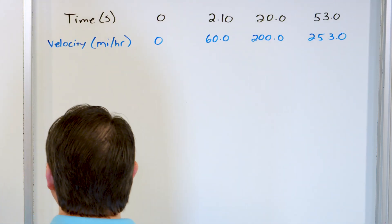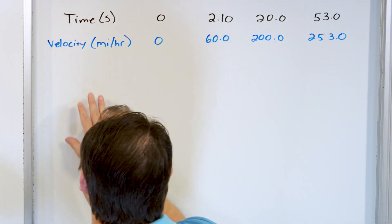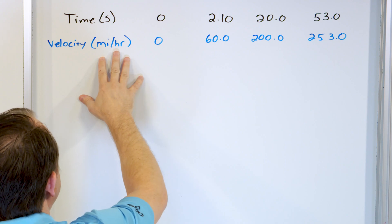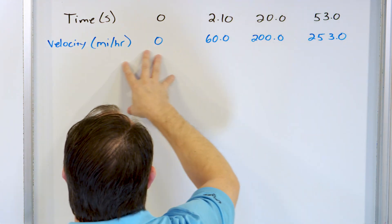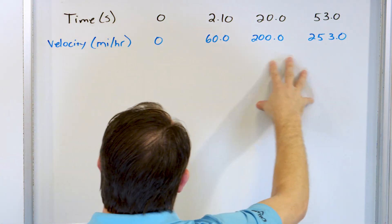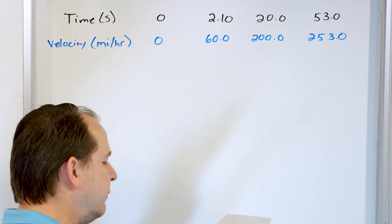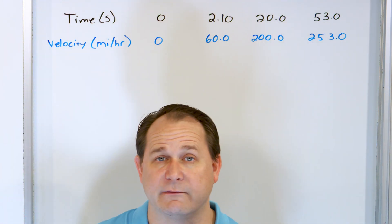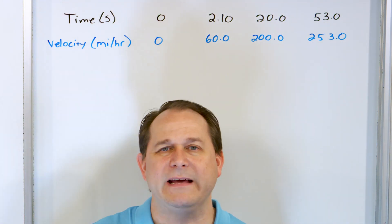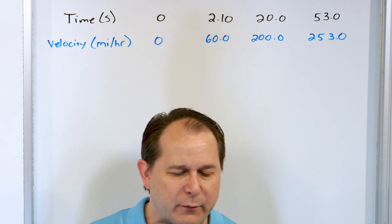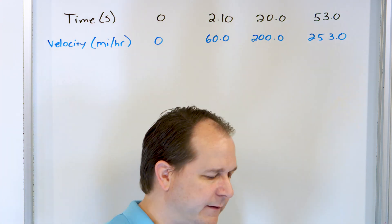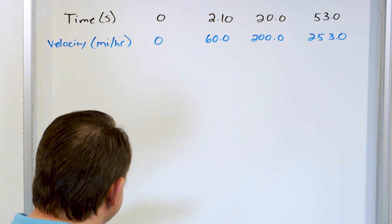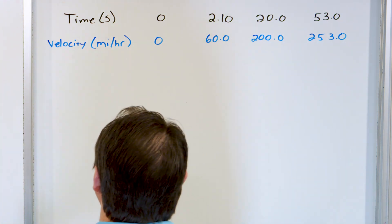Notice that we have to reconcile the idea that the velocity is given in miles per hour. We're supposed to graph in miles per hour and figure out if the acceleration is constant. But later on when it asks us to find the acceleration, it wants it in meters per second squared. So we have some unit juggling to do, but let's do first things first and graph this thing.